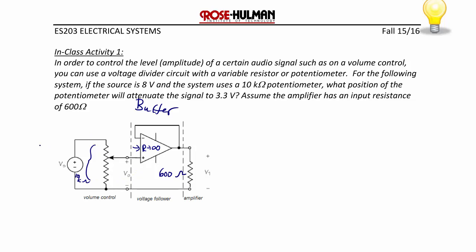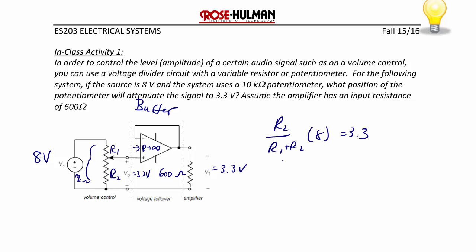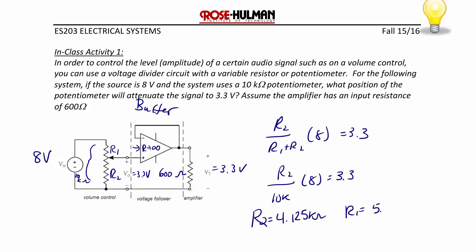Since the input is 8 volts and we want the output to be 3.3 volts, and because it's just a voltage follower, V_out must equal 3.3 volts. The wiper on a potentiometer separates the 10 kilohm pot into two distinct resistances — call the top half R1 and the bottom half R2. We want R2 over (R1 plus R2) times 8 to equal 3.3 volts. Since R1 plus R2 must equal 10 kilohms, R2 over 10k times 8 equals 3.3, giving R2 equal to 4.125 kilohms and R1 equal to 5.875 kilohms.